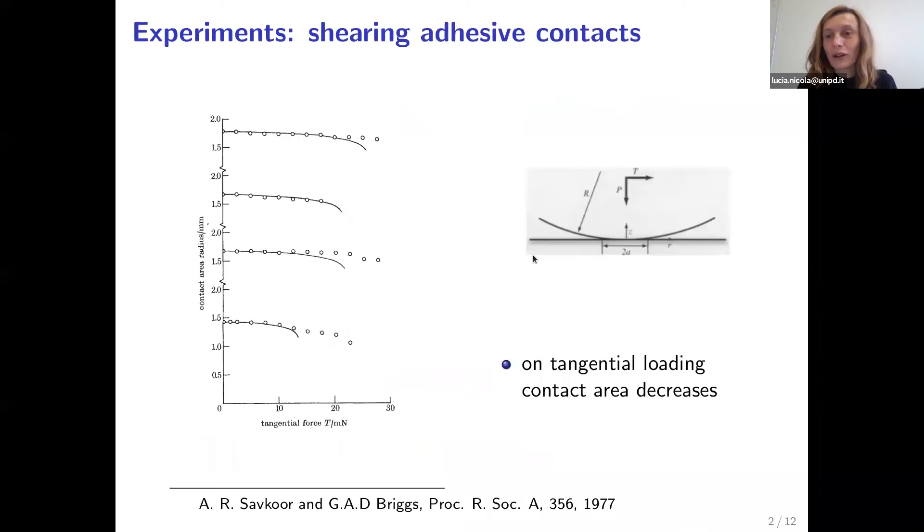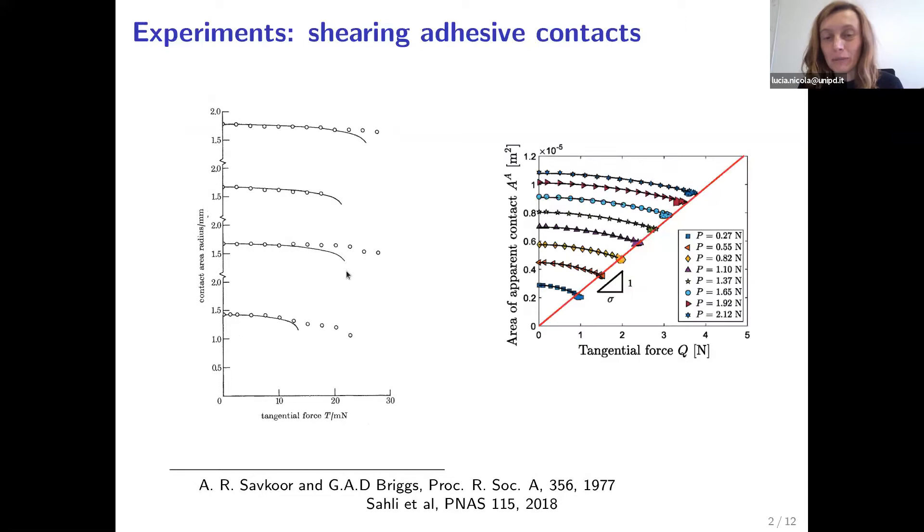For our model, we get inspired by experimental observations that show us that there is an interplay between friction and adhesion. These are, for instance, experiments by South Core and Briggs, they date back to 1977. They have pressed into adhesive contacts a soft ball with a rigid platen, and then they have applied a tangential loading. What they saw is that the contact area would decrease with increasing tangential force. So there is some de-adhesion. Similar results were found by the group of Julia and Chibert in 2018. They did some shearing of both smooth and rough balls on a rigid platen. And they found that more or less independently of the applied normal load, the decay of the contact area with tangential force will follow approximately the same law. They also found that it is possible to pass a straight line from the origin through the points where gross sliding occurs.